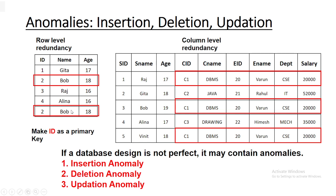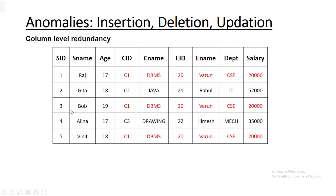The inventor of the relational model, Edgar Codd, proposed the theory of normalization in the 1970s. He introduced normal forms and continued to extend the theory with second and third normal forms. Later he joined with Raymond Boyce to develop the theory of BCNF. We will focus on insertion anomaly, deletion anomaly, and updation anomaly.